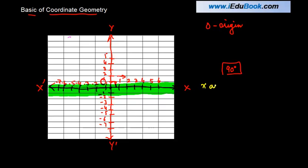This particular line x O x is known as the x-axis, and the line which is standing like this, y O y dash, is known as the y-axis. These are some of the basics of coordinate geometry. This line is the x-axis, the line which is perpendicular to the x-axis is the y-axis, and these two lines taken together are known as the coordinate axis.